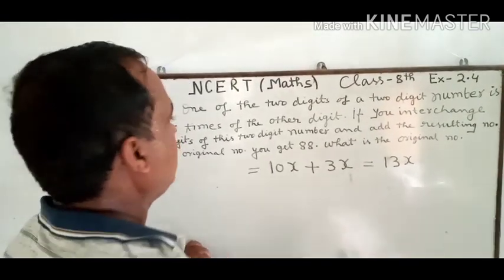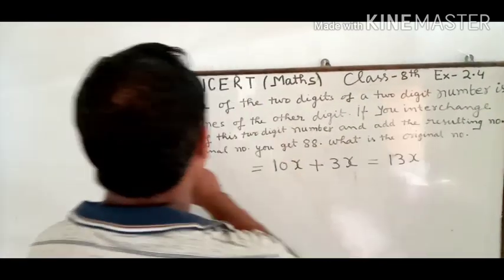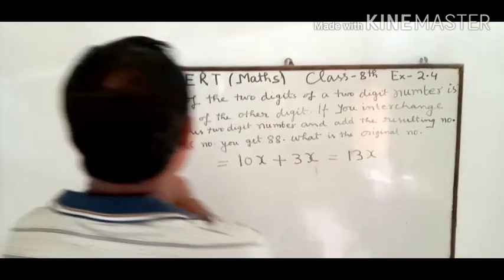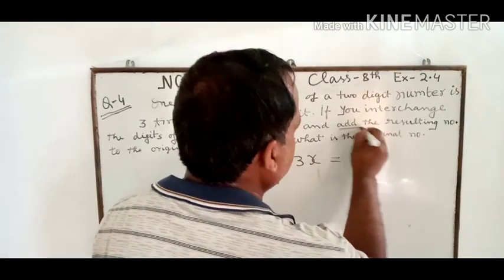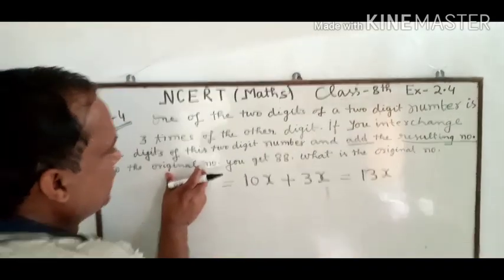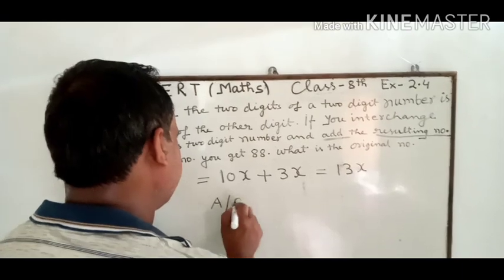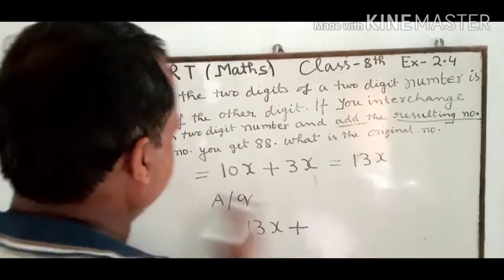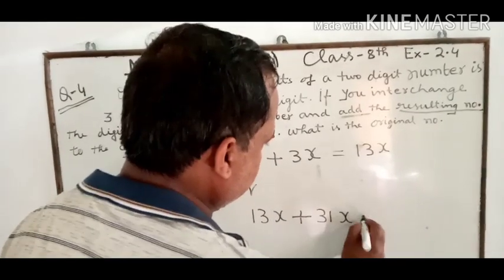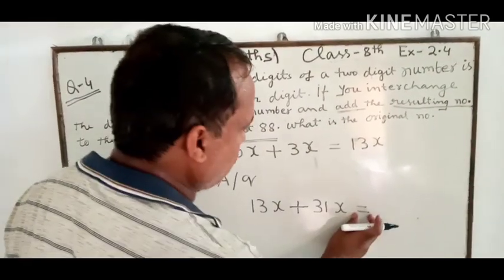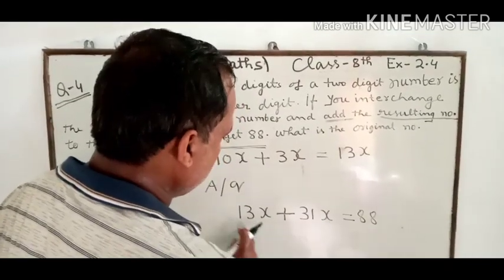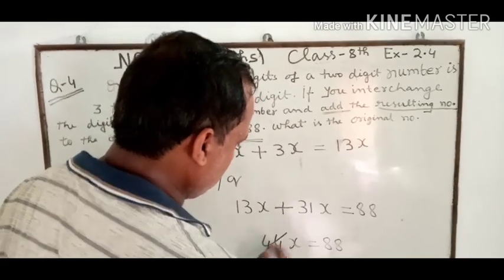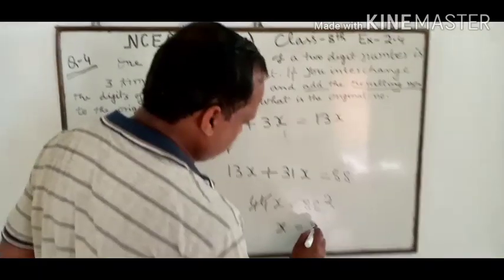According to the question, if you interchange the digits of the two-digit number, we get a new resulting number. Adding the resulting new number 13x to the original number 31x gives us 88. So 13x plus 31x equals 88, and 44x equals 88.